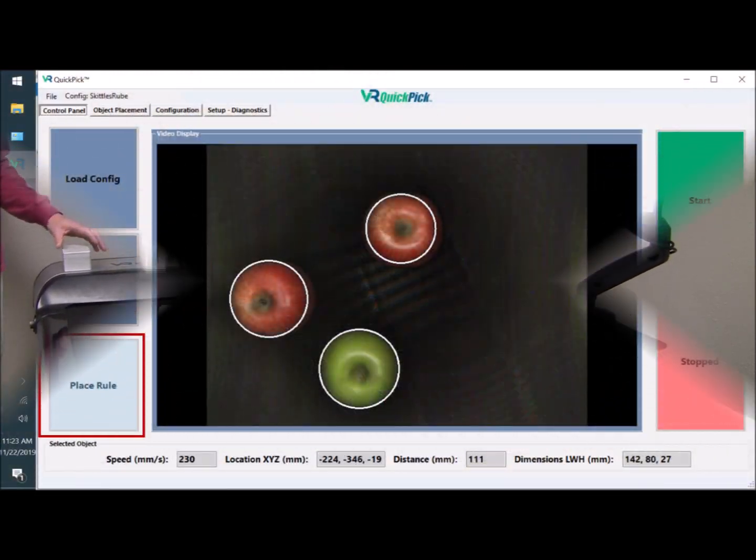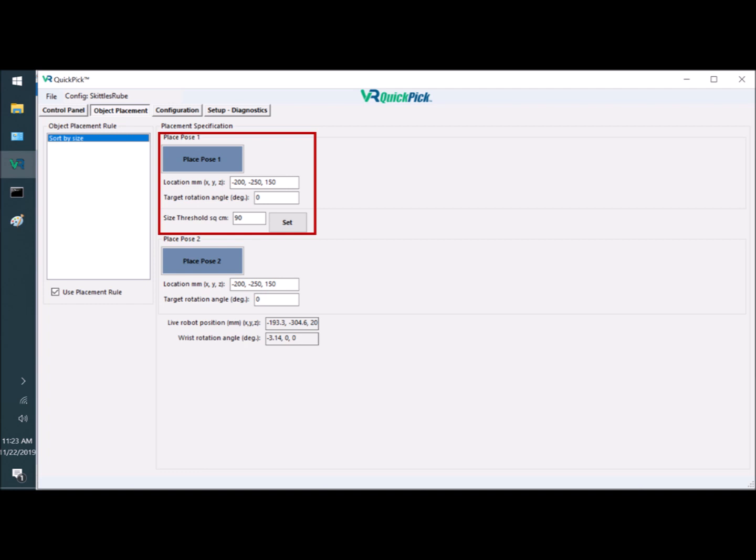Since the system can detect the size of objects, wouldn't it be powerful if it could sort by size? Well, it can. We just create a place rule on the Object Placement tab. Instead of setting up a single place location, we are able to configure two different place poses, pose number one and pose number two. These include not only the location, but the rotation of the wrist as well.